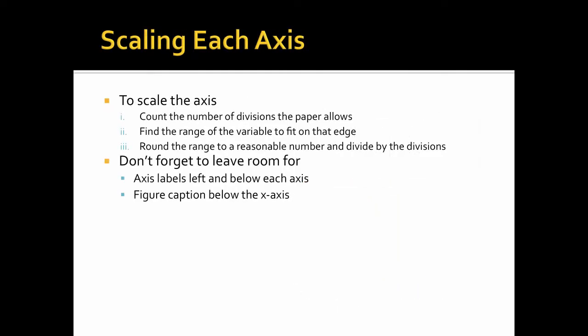With that in hand, we now need to scale the axes, each of them, so that we get the most efficient use of space and the most accurate results from everything else we do with our graph data. So don't forget that when we make our axes and we draw them, we want to leave room for axes labels left of our y-axis and below our x-axis. And even some more room below our x-axis because we're going to put a figure caption below that. Here's our data once again, just to remind you.